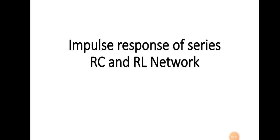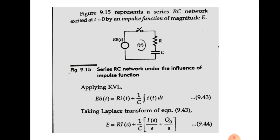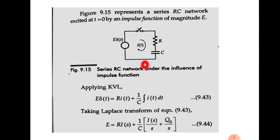Hello students. Today we are going to discuss the impulse response of series RC and RL networks. First, we will discuss the impulse response of a series RC circuit. As you can see in the figure, a series RC circuit is shown. This RC network is connected to a supply which is an impulse function with magnitude E, connected through a switch. At time T equal to 0, the switch is closed and current I(T) flows through the circuit. We will analyze this circuit to find the response corresponding to the excitation E·δ(T).